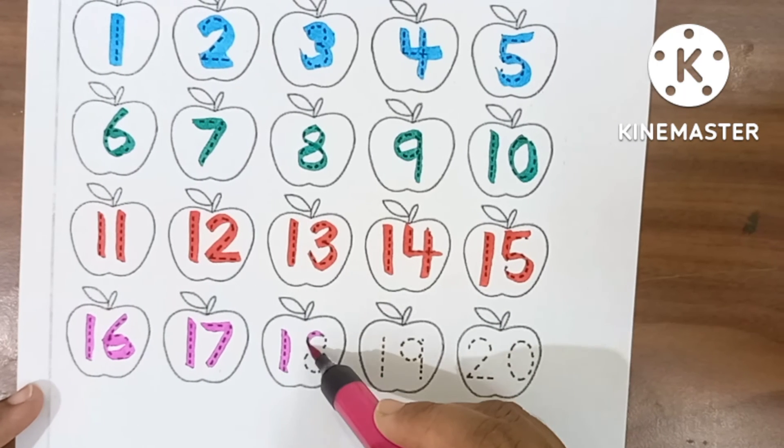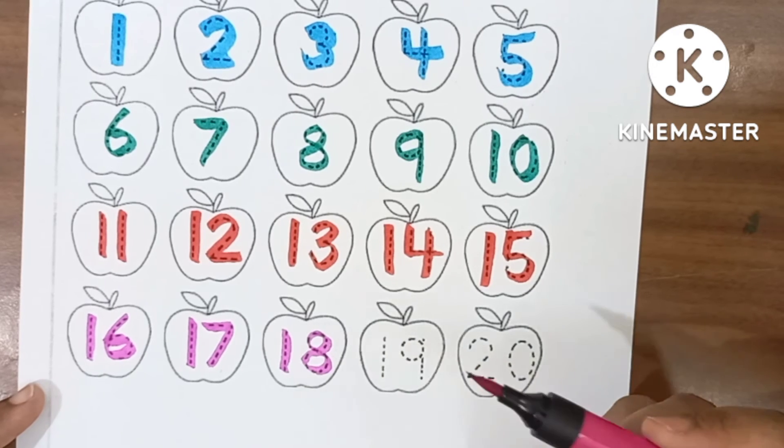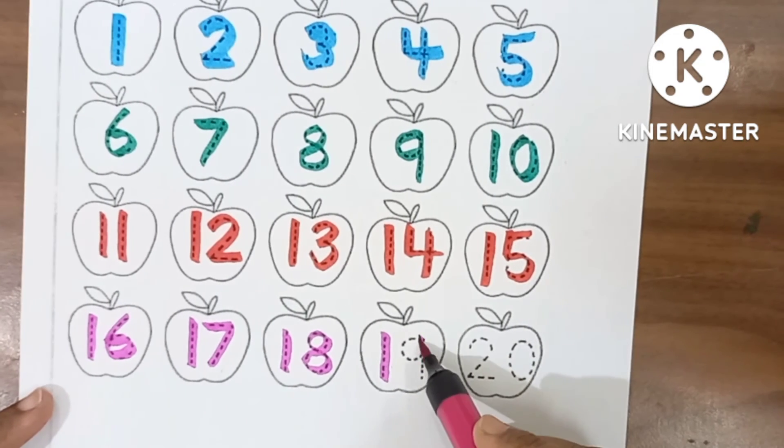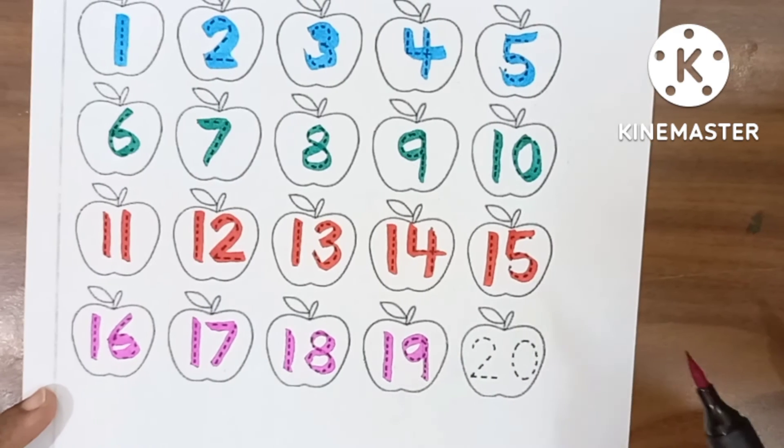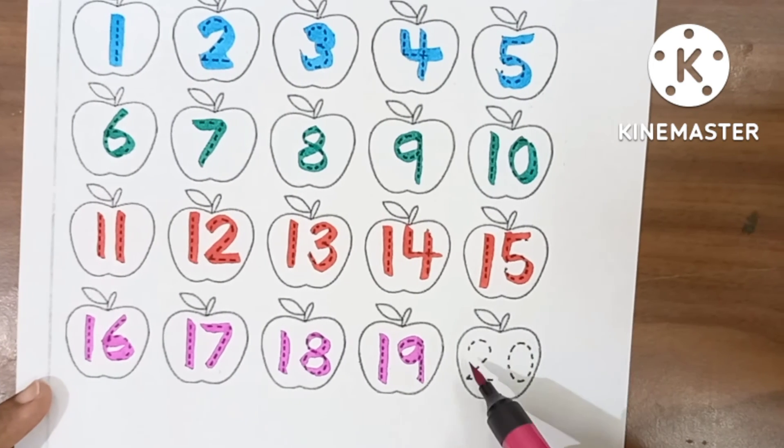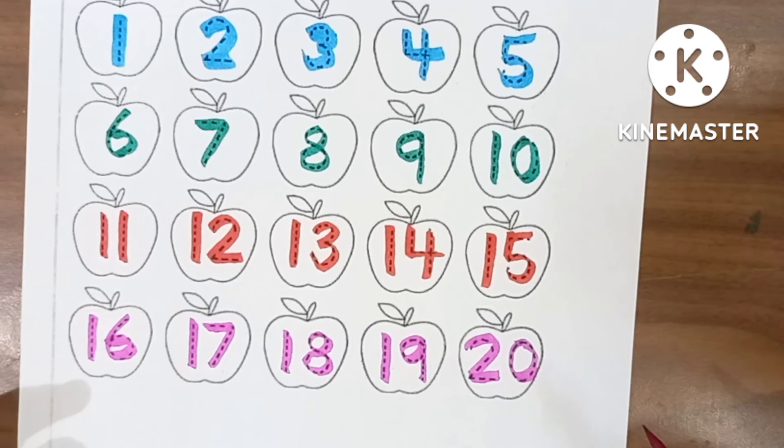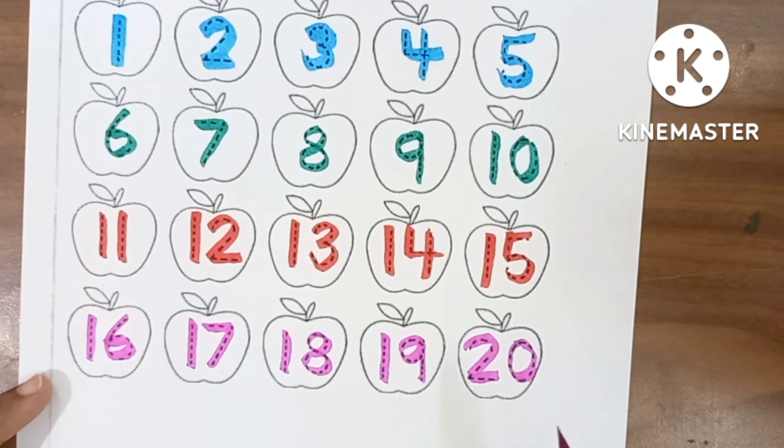1-8, 18, E-I-G-H-T-E-N-18. 1-9, 19, N-I-N-E-T-E-N-19. 2-0, 20, T-W-E-N-T-Y-20.